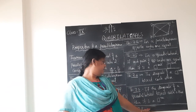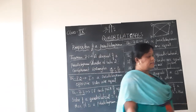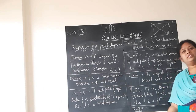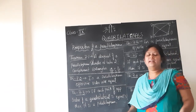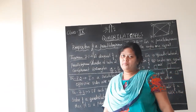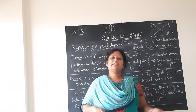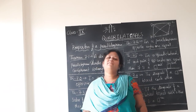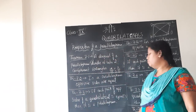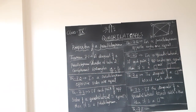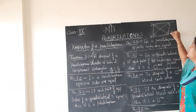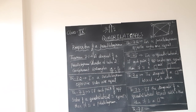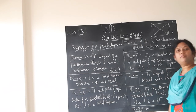Theorem 7.8 states that if in a quadrilateral opposite sides are equal and parallel, then it is a parallelogram — or equivalently, in a parallelogram opposite sides are parallel as well as equal. Together these two conditions are taken as the statement of Theorem 7.8: the opposite sides of a parallelogram are equal as well as parallel to each other.